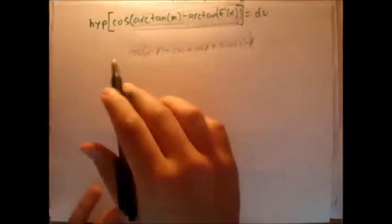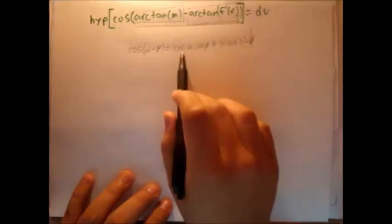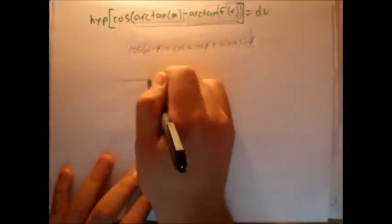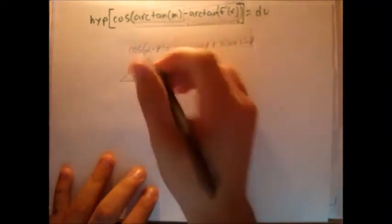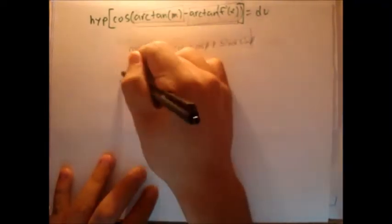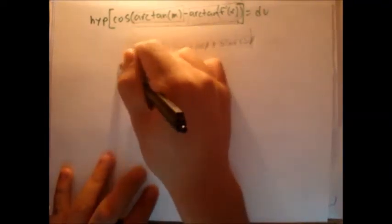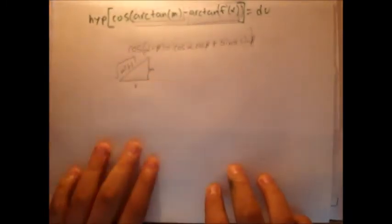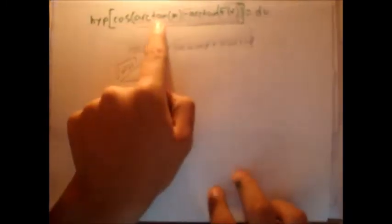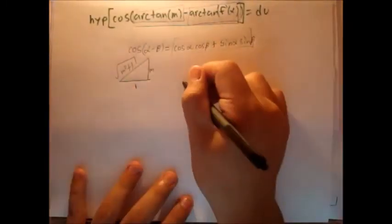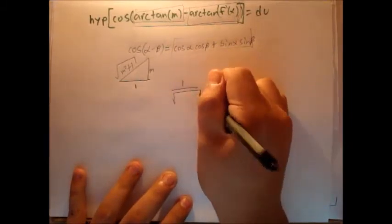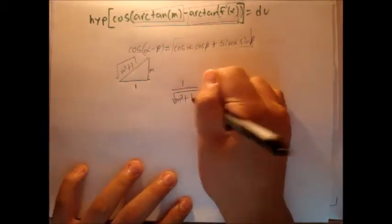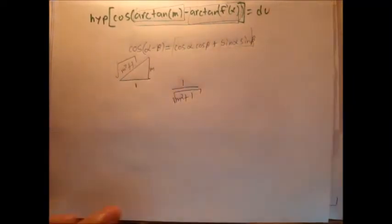So cosine arctangent m minus... Let's start with first cosine of arctangent m. Remember, we can use our triangle right here. m, 1, that's the missing part, square root of m squared plus 1. So cosine of this would simply be 1 over square root m squared plus 1.